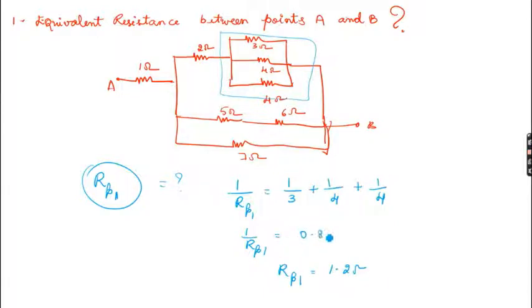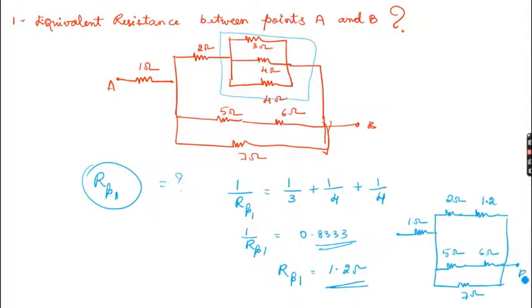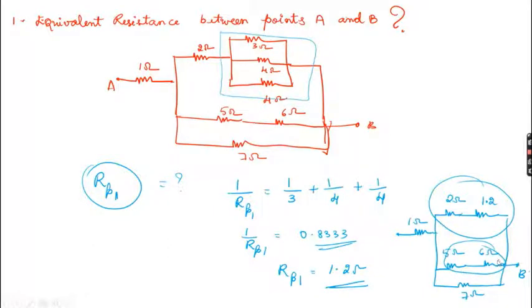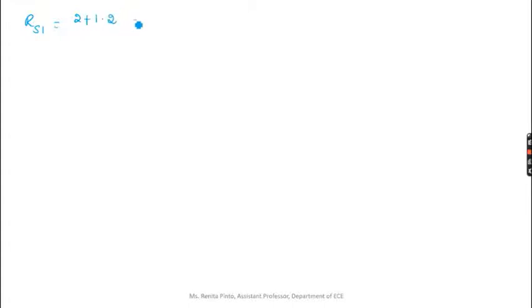1/RP1 is around 0.833, so RP1 = 1.2Ω. Now the circuit simplifies. You can solve the series resistances in each branch. The first branch is 2 + 1.2 = RS1 = 3.2Ω. The second branch is 5 + 6 = 11Ω.